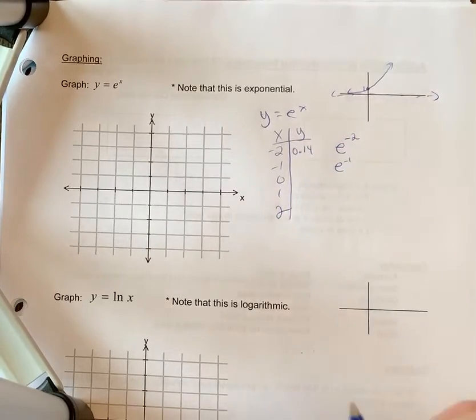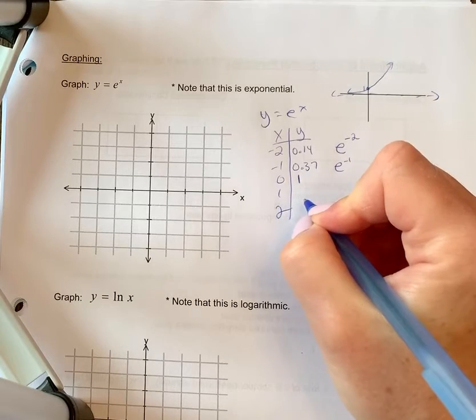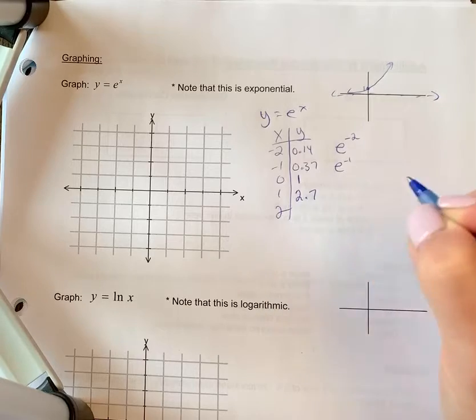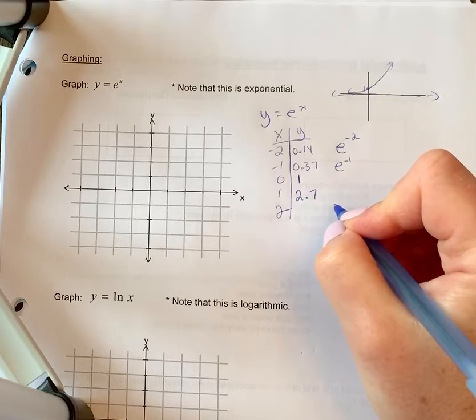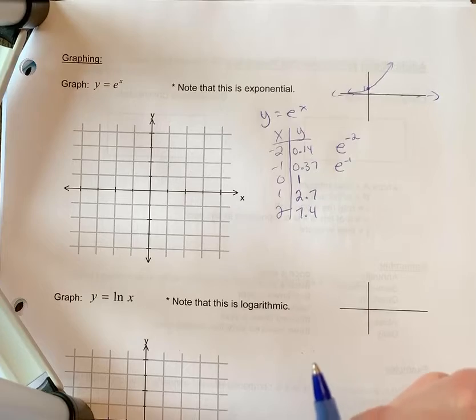e to the negative 1, you're going to put that in your calculator and you're going to get 0.37. e to the 0, well of course anything to the exponent 0 is 1. e to the 1 would be the value of e, so that's 2.7. And then e squared, you're going to use your calculator again and you're going to get 7.4. So we can plot these points.